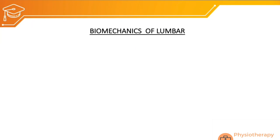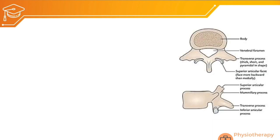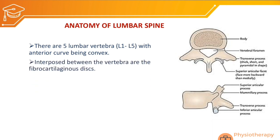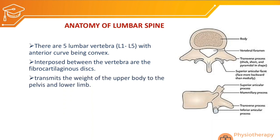Welcome to biomechanics class. We will discuss the lumbar vertebral spine. Brushing up the basic anatomy: there are five lumbar vertebrae, L1 to L5, with the anterior curve being convex and posterior curve concave, making the normal curvature lordotic. Between the lumbar vertebrae there is a fibrocartilaginous intervertebral disc, which transmits weight from the upper body to the pelvis and lower limb.